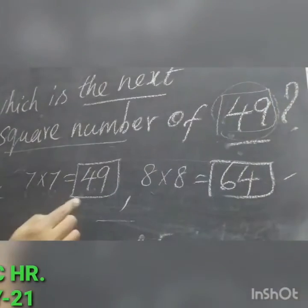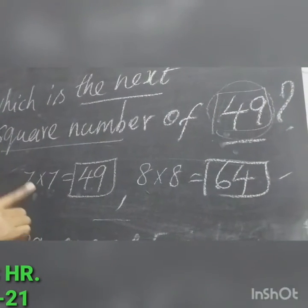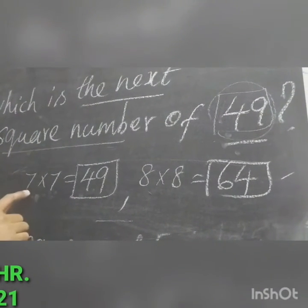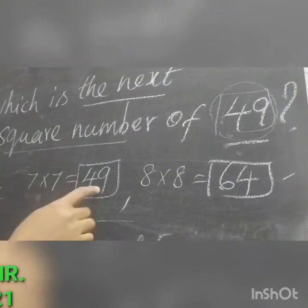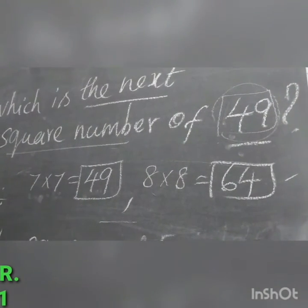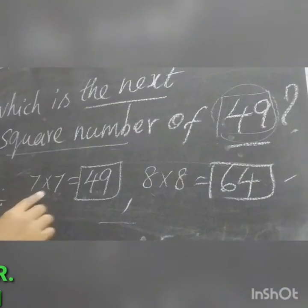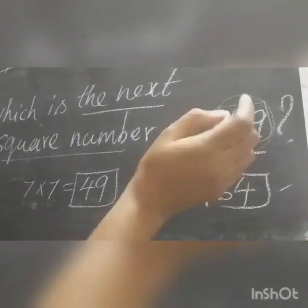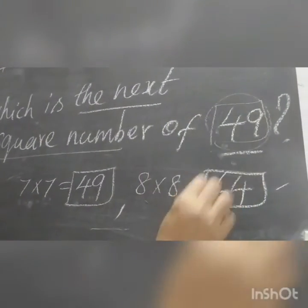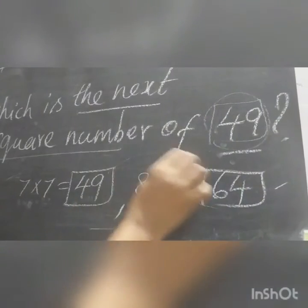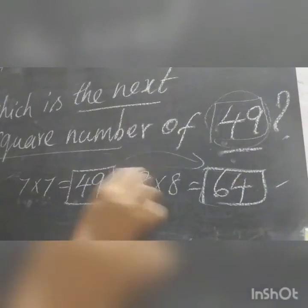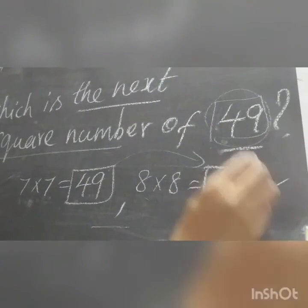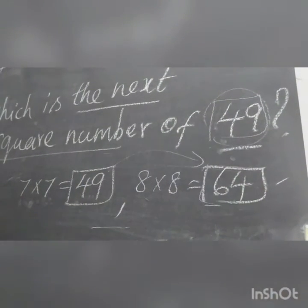To summarize: 49 is the square of 7, so the next square number is 8 multiplied by 8, which is 64. The next square number after 49 is 64. Is it clear, students?